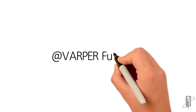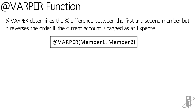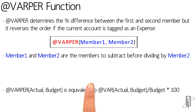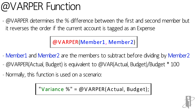The ATVARPER function is a slightly more complicated version of ATVAR. It determines the percent increase or decrease between the first and second members, again taking into account which members are tagged as expense. So instead of ATVAR, we say ATVARPER (PER for percentage), member one comma member two. For a revenue-type account it's: (Actual minus Budget) divided by Budget times 100. For an expense account it's: (Budget minus Actual) divided by Budget times 100 — it always uses the second member as the denominator.